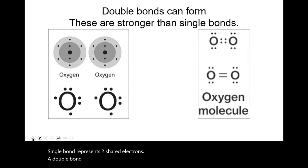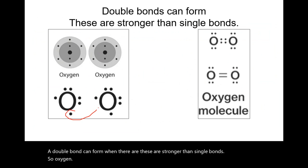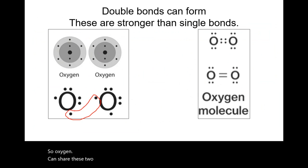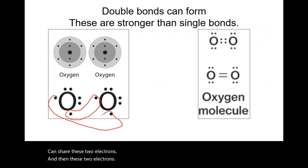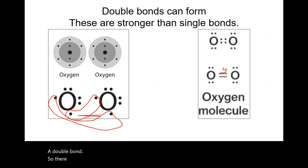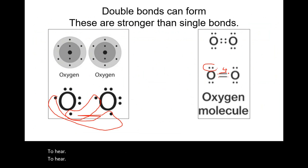A double bond can form when atoms share more electrons — double bonds are stronger than single bonds. Oxygen can share two electrons here and two electrons there, forming a double bond. There are four electrons total in the double bond — two here and two there — and these remaining are the lone pairs.